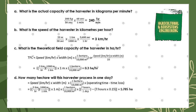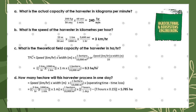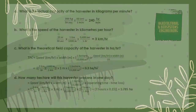Next, we solve for the number of hectares the harvester will process in one day. The formula is: speed (km/hr) × width (m) × (1 ha / 10,000 m²) × (operating time − time loss). Substituting: 3 km/hr × 1000 m/km × 1 m × (1 ha / 10,000 m²) × (7 hours − 7 hours × 0.15), giving a final answer of 1.785 hectares per day.